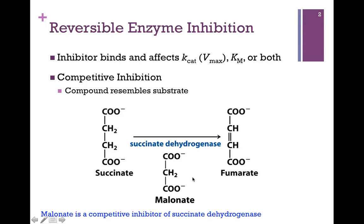I would point out here the distinction between a reversible competitive inhibitor and a suicide substrate from our previous lesson. For the suicide substrate, it does resemble the native substrate and we start catalysis, but we can't finish — it gets stuck irreversibly in the active site. In the case of a reversible inhibitor, however, it does resemble the natural substrate, but no chemistry occurs, and so binding is reversible. The inhibitor may bind and then release — that's what makes it reversible.